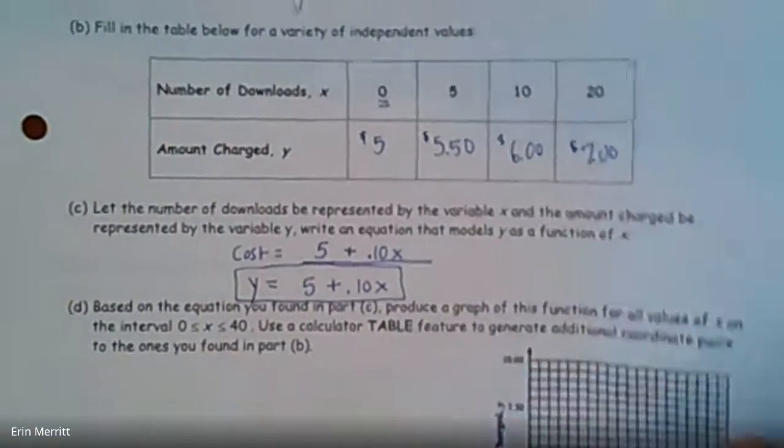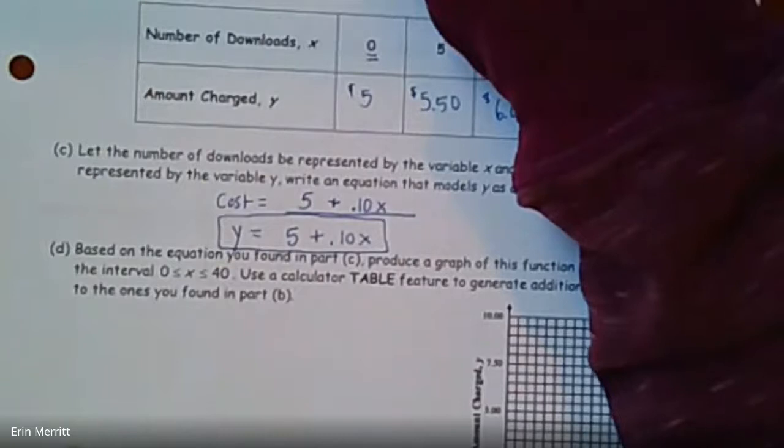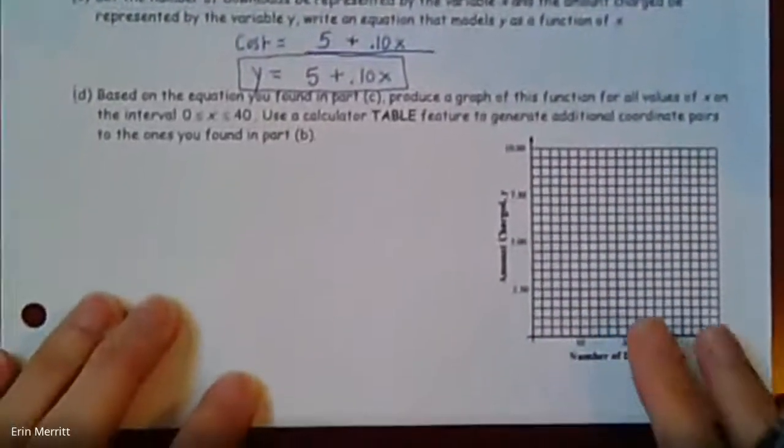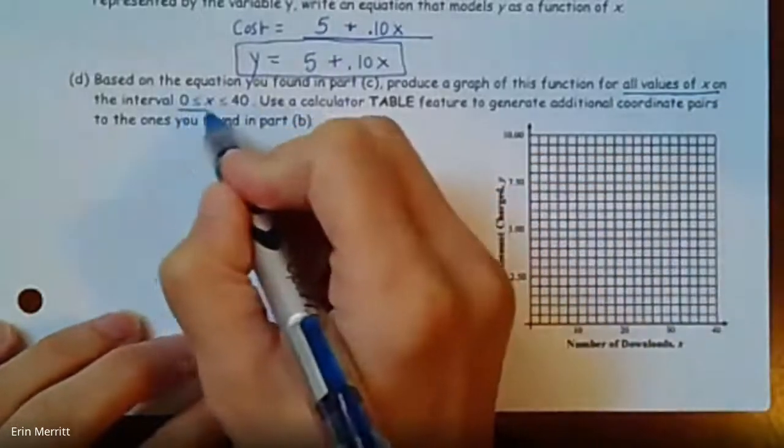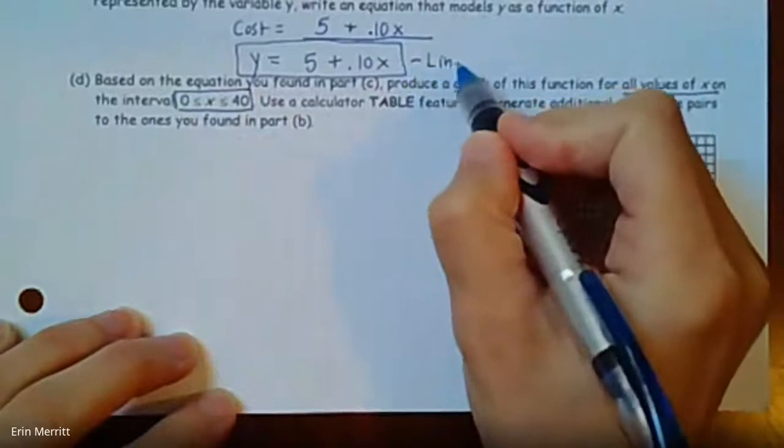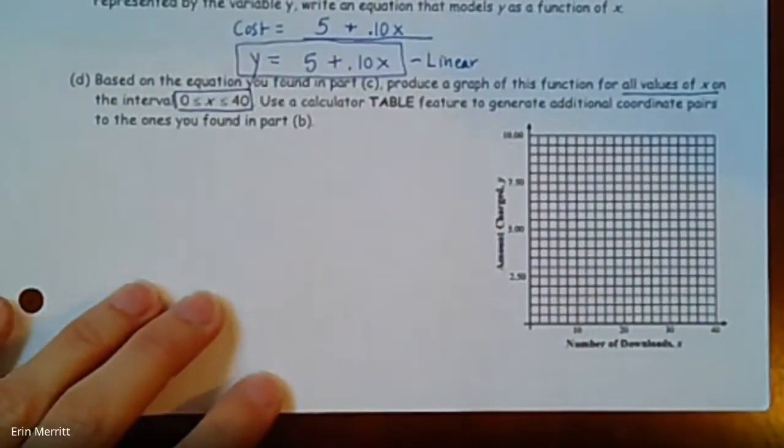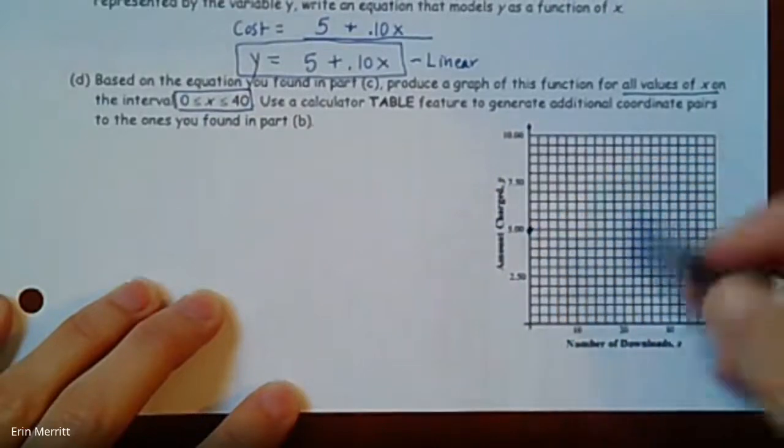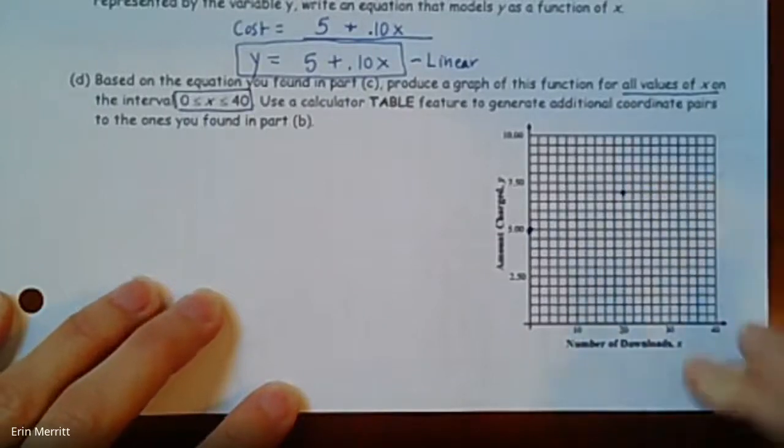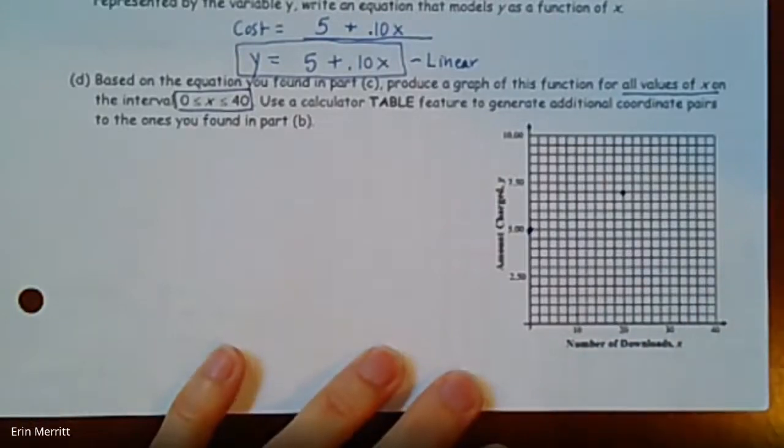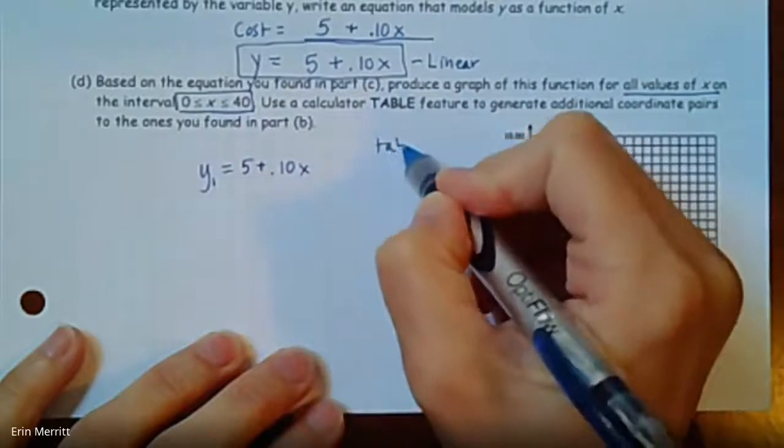The last part, we have a little graphing to do. Something to keep in mind with us is as we do the graphing. With this here, it says produce a graph for the function for all values of X on the interval from 0 to 40. So this here would be a linear function where it would extend forever. They're saying we only want to see it between 0 and 40. So in our chart, we already got 0 to 20. So at 0, we know we're at $5. At 20, we know we're up to $7.